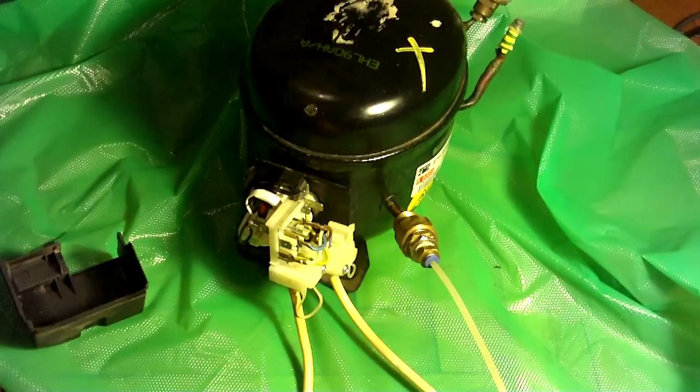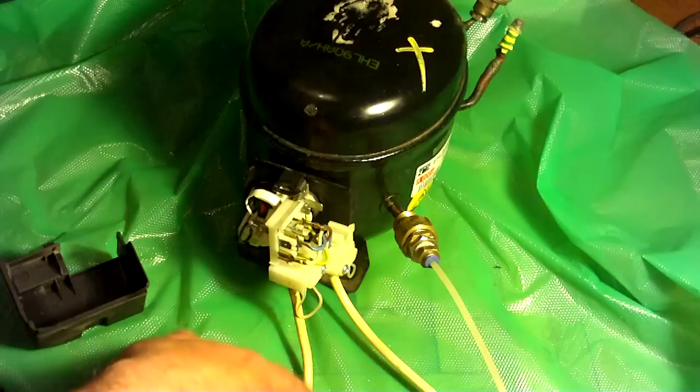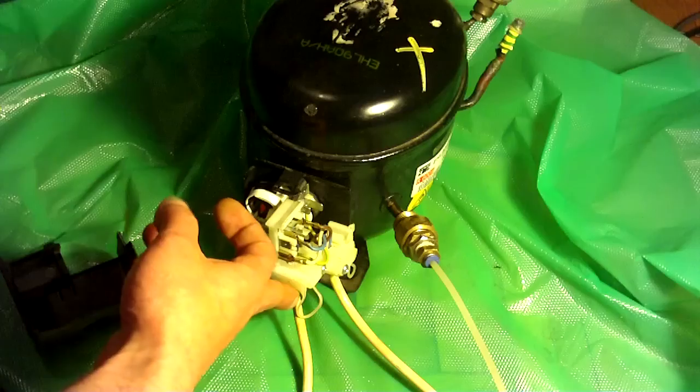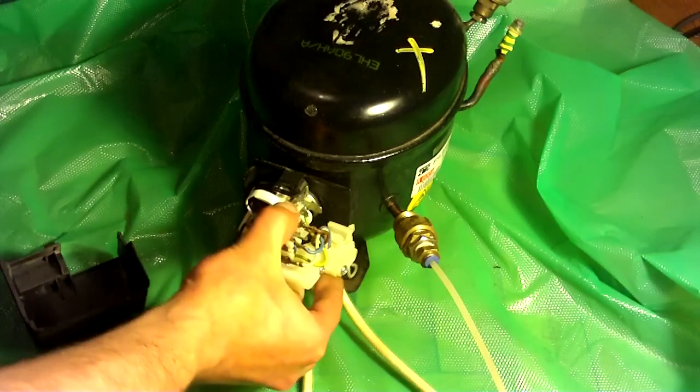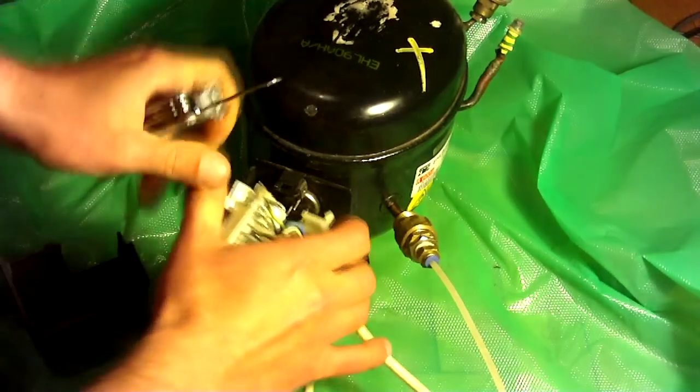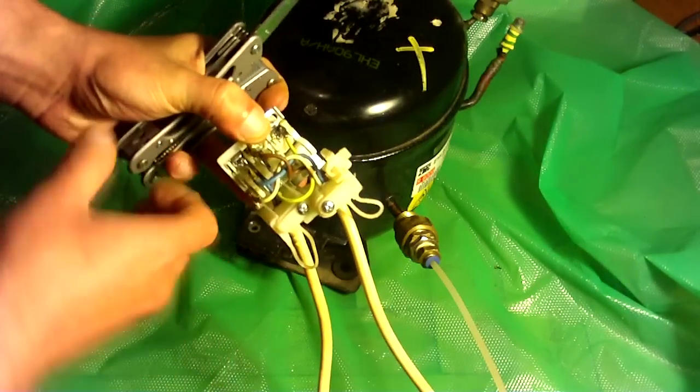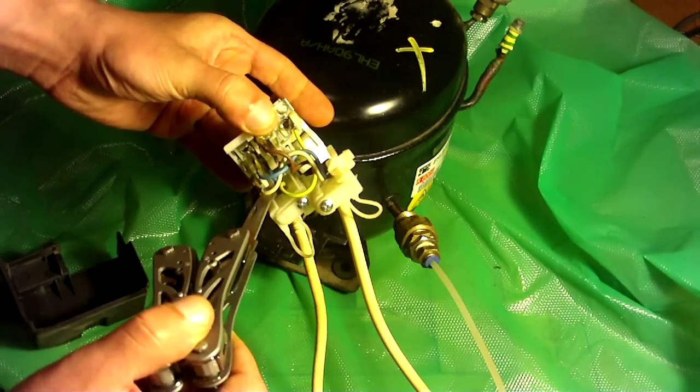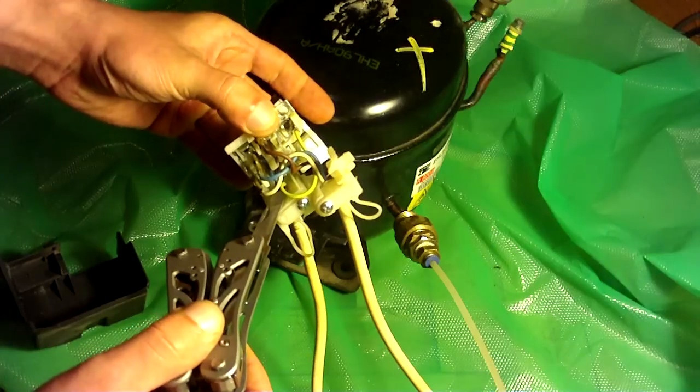First, we'll start from the very beginning. You have to find the mains cable. As you can see, it's right here. There are three wires in it: the brown one is line, the blue one is neutral, and the green and yellow one is ground.